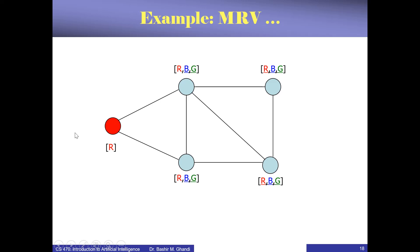The moment we choose that, the remaining values for the neighboring nodes become two — they cannot be red anymore, only blue and green. Suppose we choose blue for one of them. Then the next connected node will have only one possible value, which can only be green. So we make it green. That automatically removes one possibility from its neighbor, which can now be either red or green.